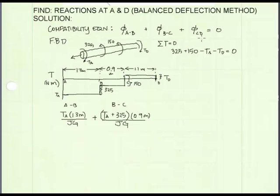Our last term in our compatibility equation is the angle of twist from C to D. And the term T we will just write in terms of T_A. It'll be T_A plus 325 newton meters, plus an additional 150 newton meters. That takes us up to this level here. And the length over which it's acting is 1.1 meters. And that is all equal to 0. We see that J G cancels out.